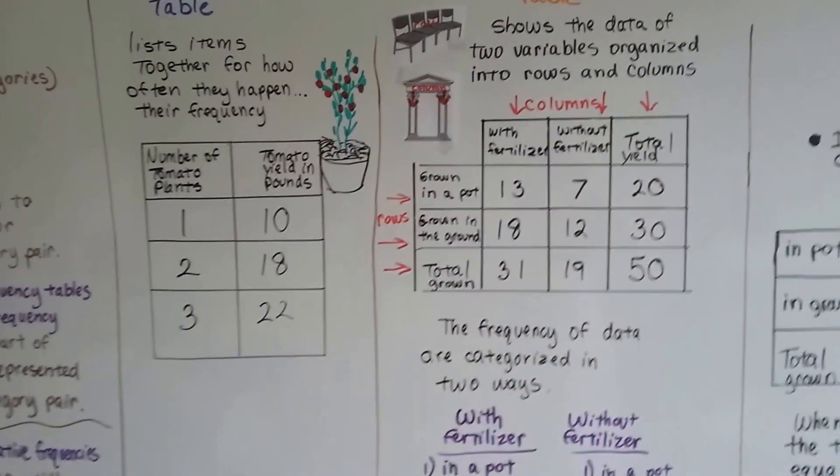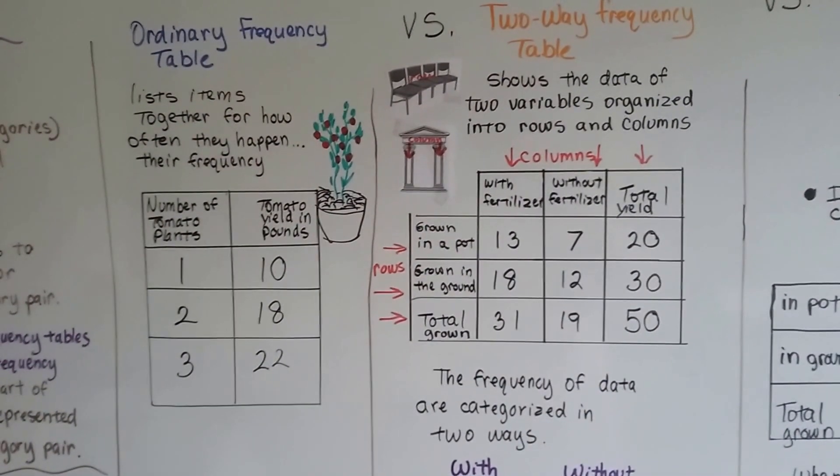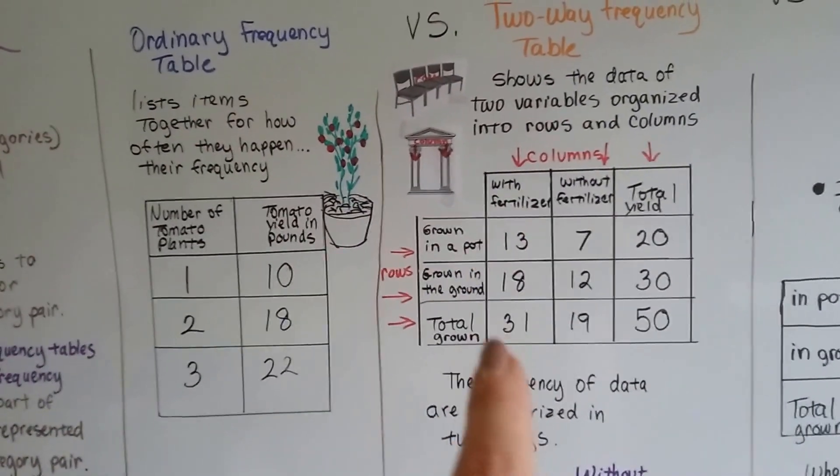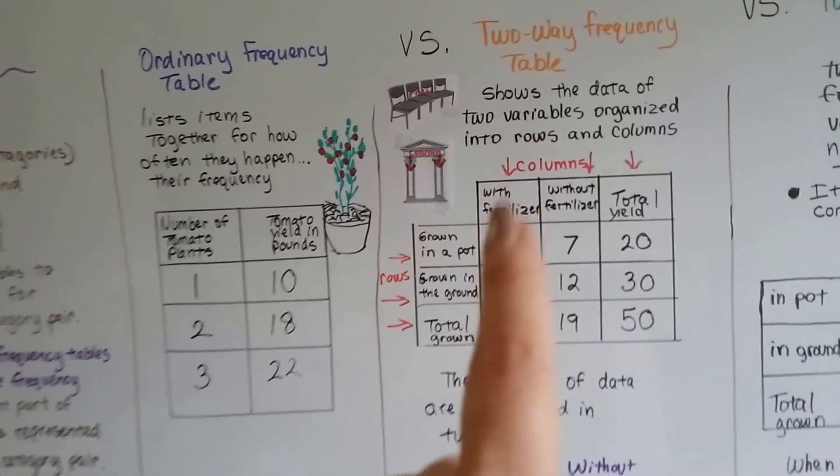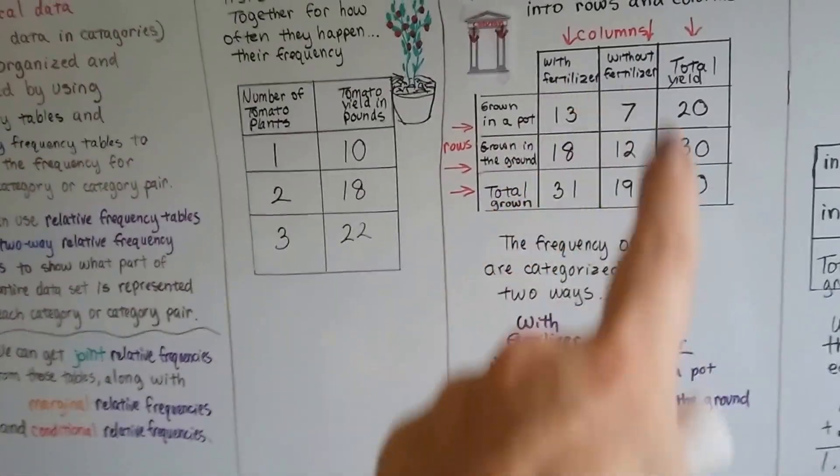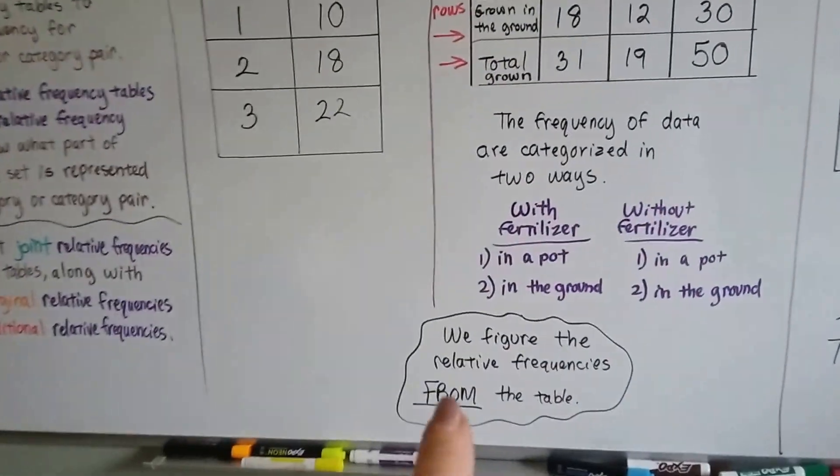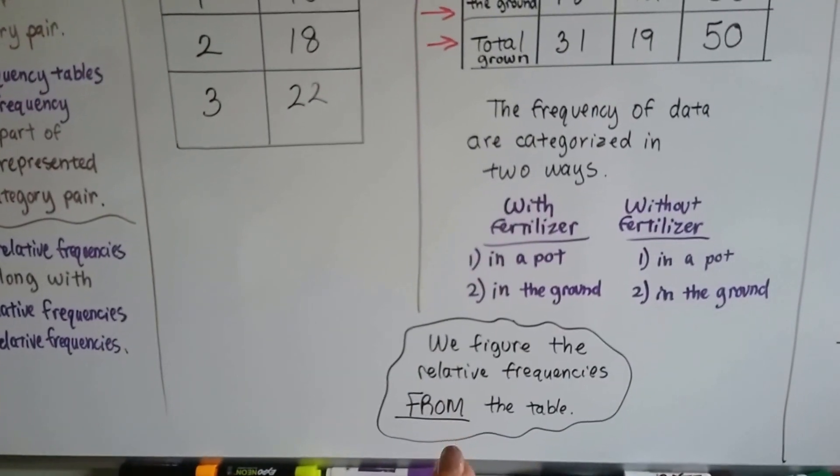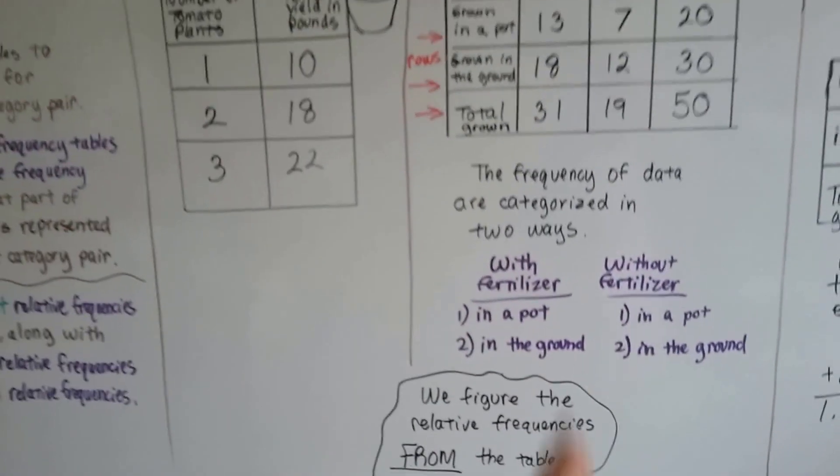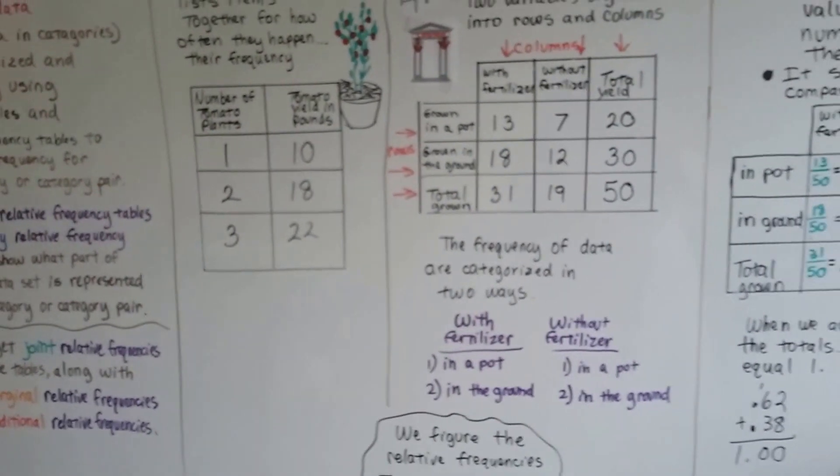But there's more information here, isn't there, in this two-way frequency table. So now, in this type of table, this two-way frequency table, we're going to take this information and we're going to figure the relative frequencies from the information that was in this table.